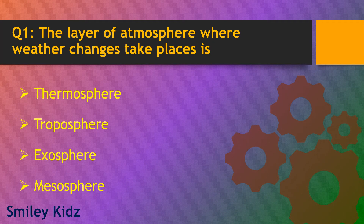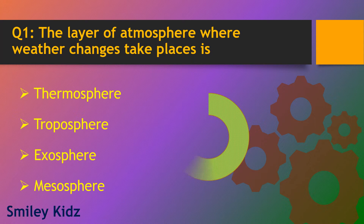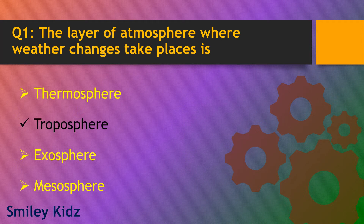Question number 1. The layer of atmosphere where weather changes take place in. Options are thermosphere, troposphere, exosphere and mesosphere. The right answer is troposphere. The layer of atmosphere where weather changes take place is troposphere.